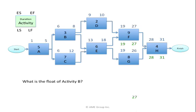Moving to activity G — the latest G may finish is day 27 for H to start by day 28. The latest G may start: 27 minus 8 plus 1 equals day 20. For activity D, the latest D may finish for F to begin on day 19 is day 18. If activity D is 2 days long, the latest it could start would be day 17: 18 minus 2 plus 1 equals day 17.